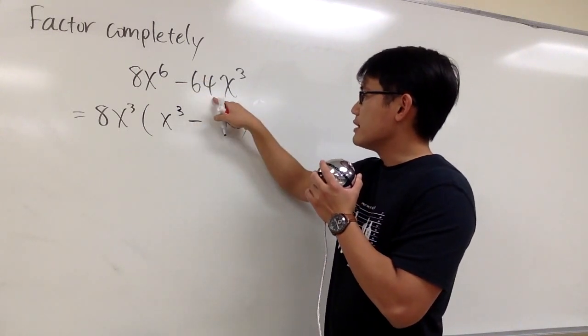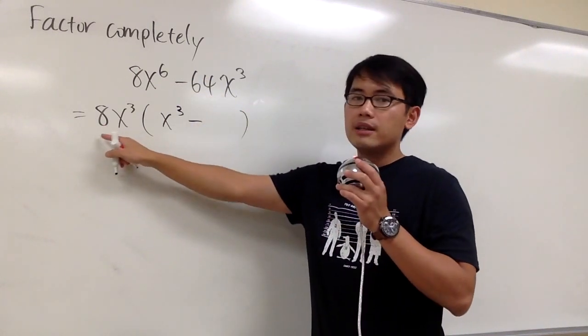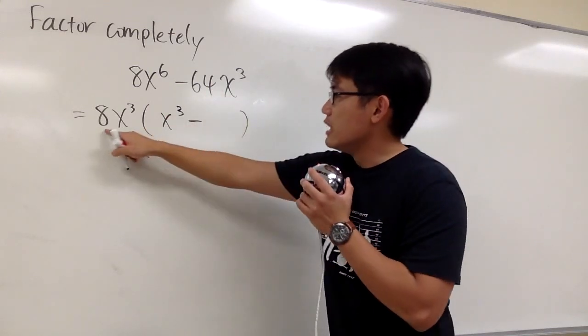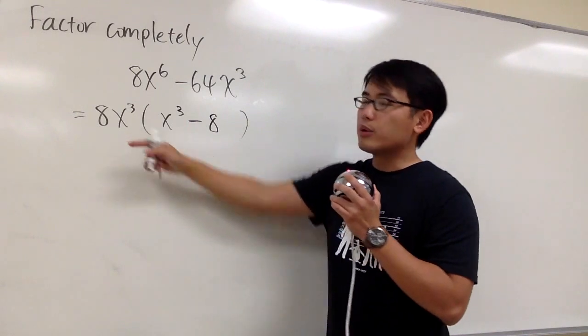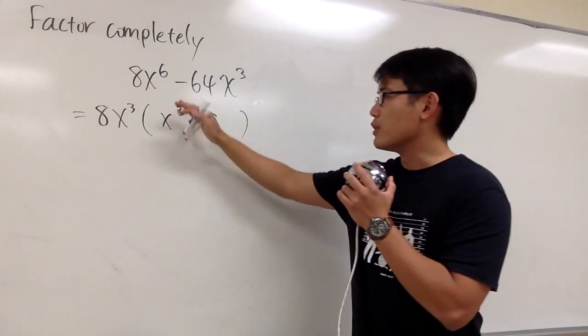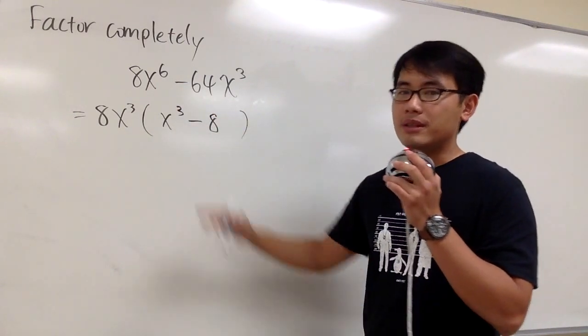Originally this was 64, but then we factor out the 8, so we think about 64 divided by 8. We have 8. And this x to the 3rd power is being out already, so we have x to the 3rd power minus 8 in this parentheses.